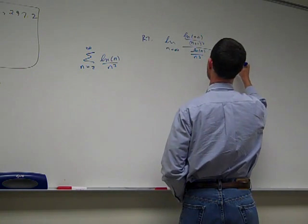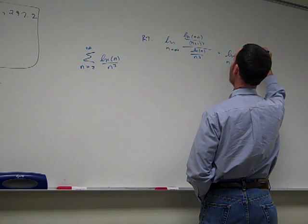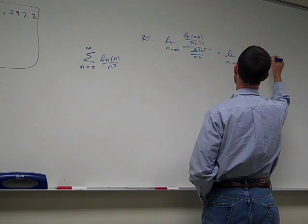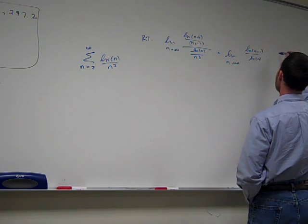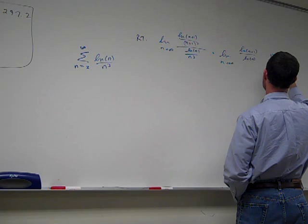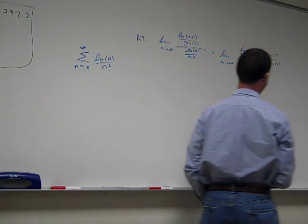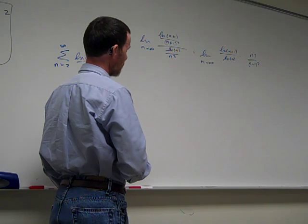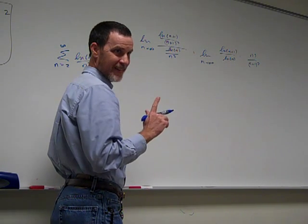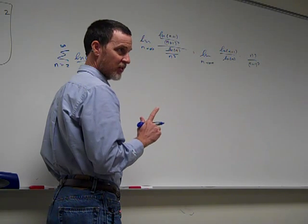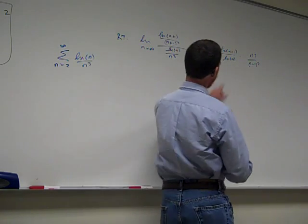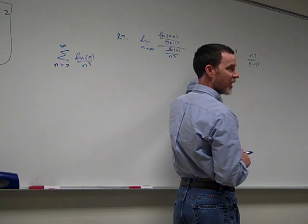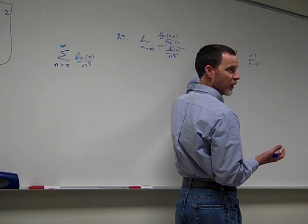So now I flip and multiply and I've got natural log of n plus 1 over natural log of n times n cubed over n plus 1 cubed. The problem is I'm really, really sure that both of those are going to 1, which means the ratio test is going to fail because as n goes to infinity, n plus 1 and n are very close together, so natural log of n plus 1 and natural log of n are very close together, right?